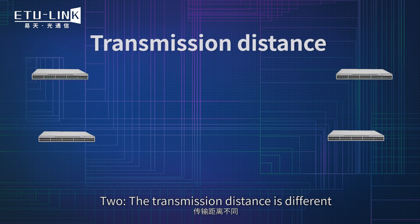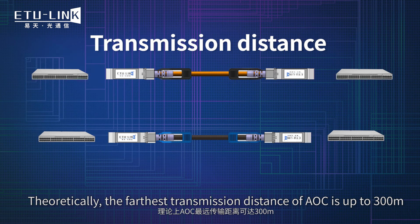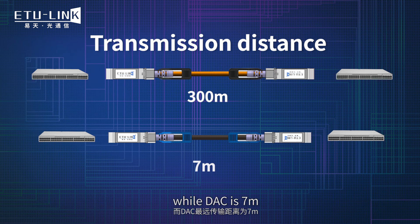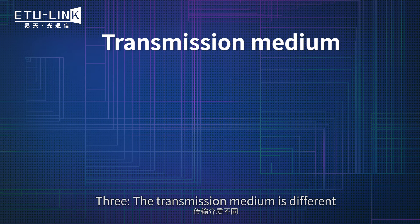Two: the transmission distance is different. Theoretically, the farthest transmission distance of AOC is up to 300 meters, while DAC is 7 meters.